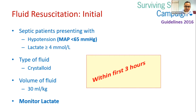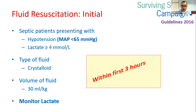Lactate is not only increased because of anaerobic metabolism in sepsis. Various mechanisms contribute, including high production through the aerobic cycle, low clearance in sepsis, and anaerobic production. All three mechanisms play a role in increasing lactate levels.